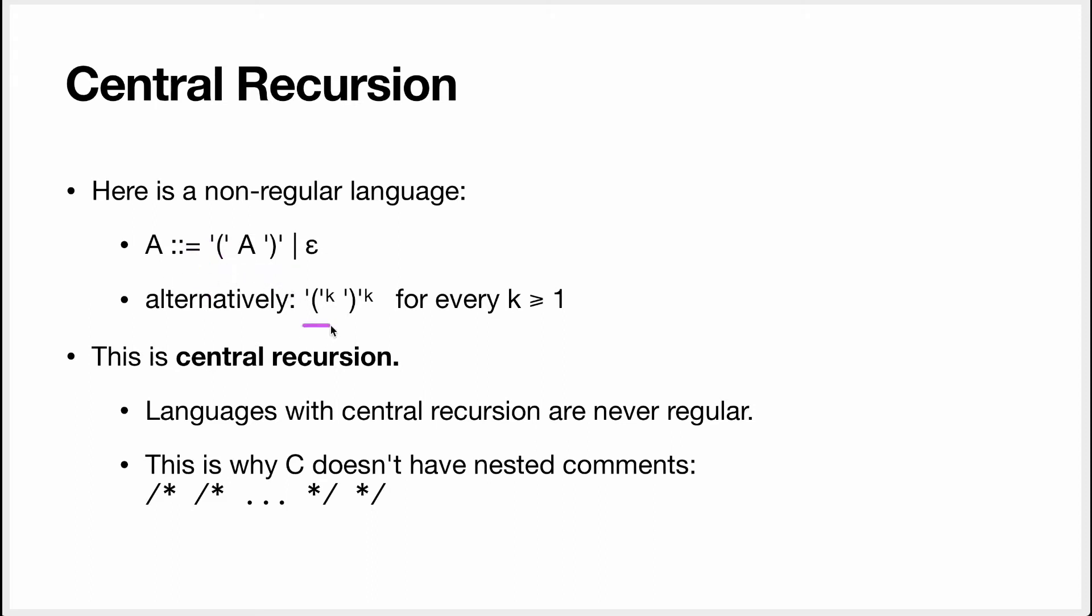Another way to write this grammar is opening parentheses k times and closing parentheses k times, for every k bigger or equal to one. So the sentence that's one opening and one closing is in the language. The sentence that's two opening and two closing is also in the language.